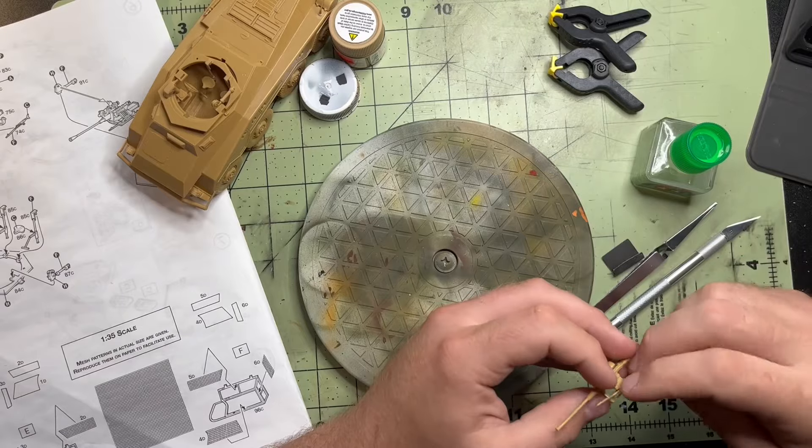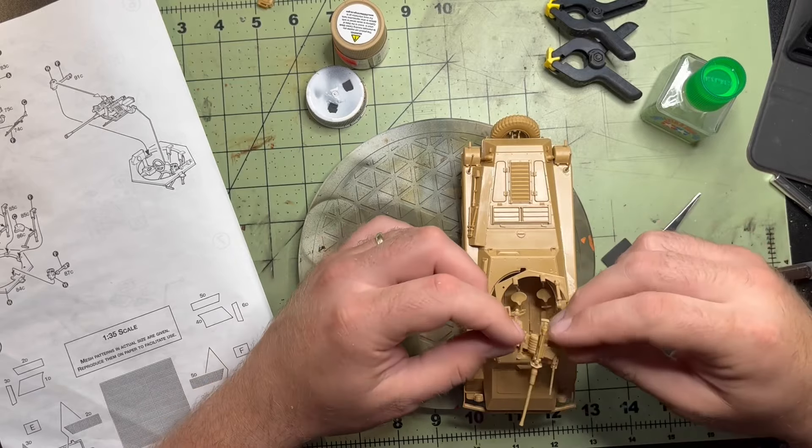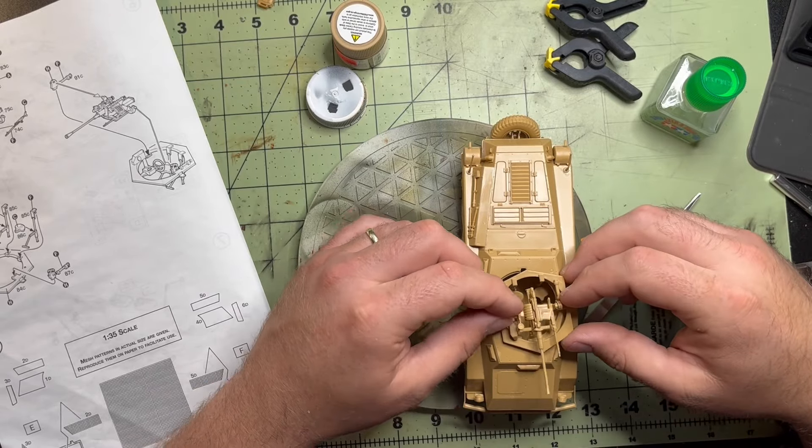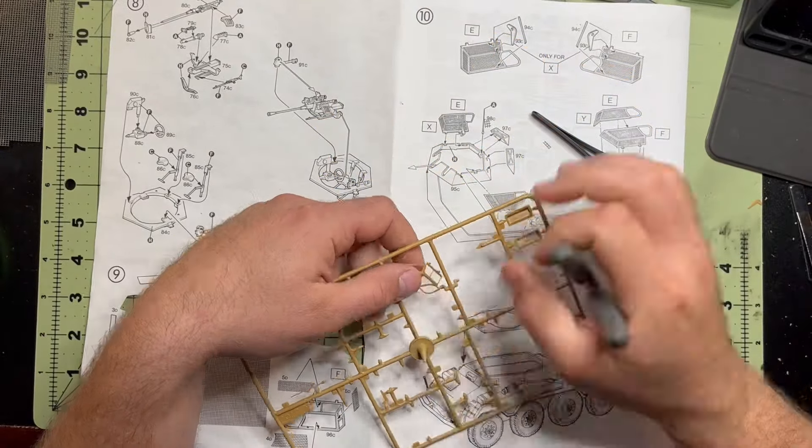Here we are building our KWK 38. And if anybody's curious what the KWK stands for, it stands for Kampfwagen Kanone, which means fighting vehicle cannon. So if you're ever building a model and you're wondering what KWK stands for, now you know.